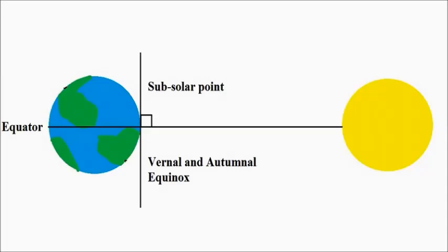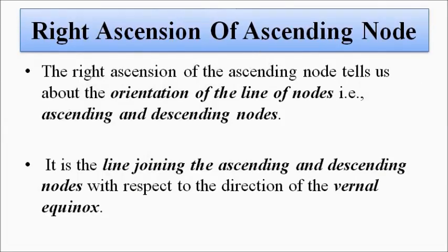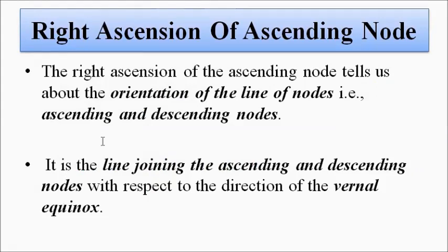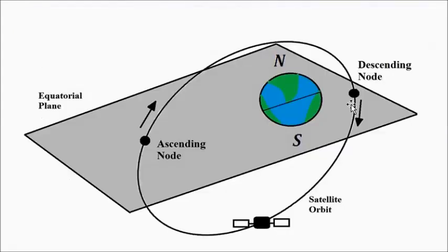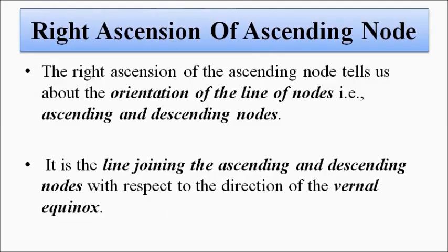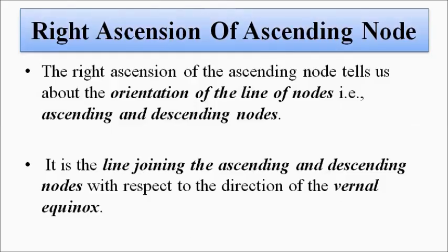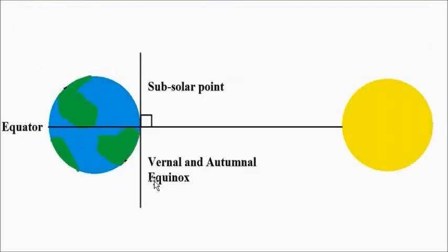The right ascension of ascending node is related to the ascending and descending nodes and the equinox event. It tells us about the orientation or direction of the line of nodes — that is, the line joining the ascending node and the descending node. It is the direction of this line measured with respect to the direction of the vernal equinox or spring equinox.